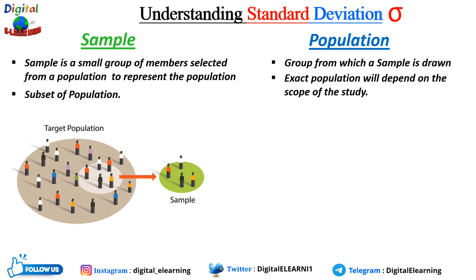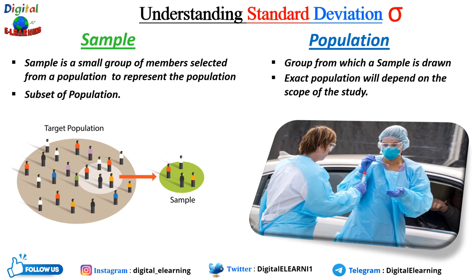Let us understand the difference between sample and population using a real-life example. Some time back, millions of people were infected because of COVID-19, and many companies were conducting clinical trials to make a vaccine. They selected a small portion of people from different backgrounds — probably by age, gender — who were infected with COVID-19 as a sample, and then performed the study on these samples. Those samples represented the millions of people infected worldwide, because it is not possible to conduct tests on millions of individuals at one time.